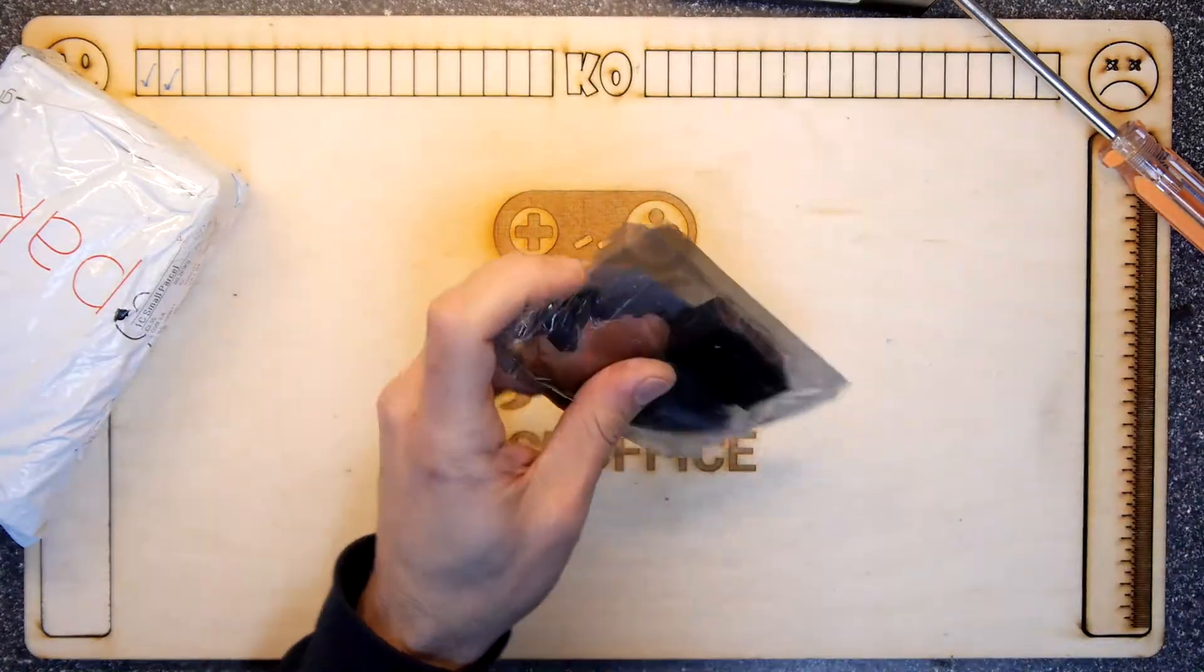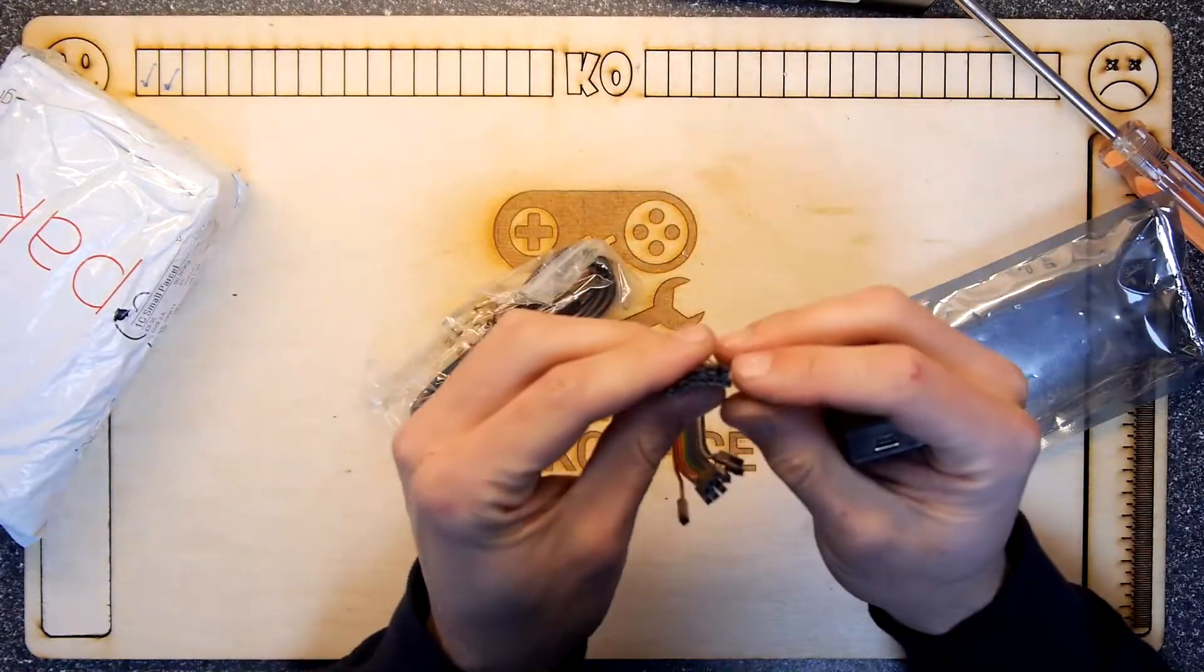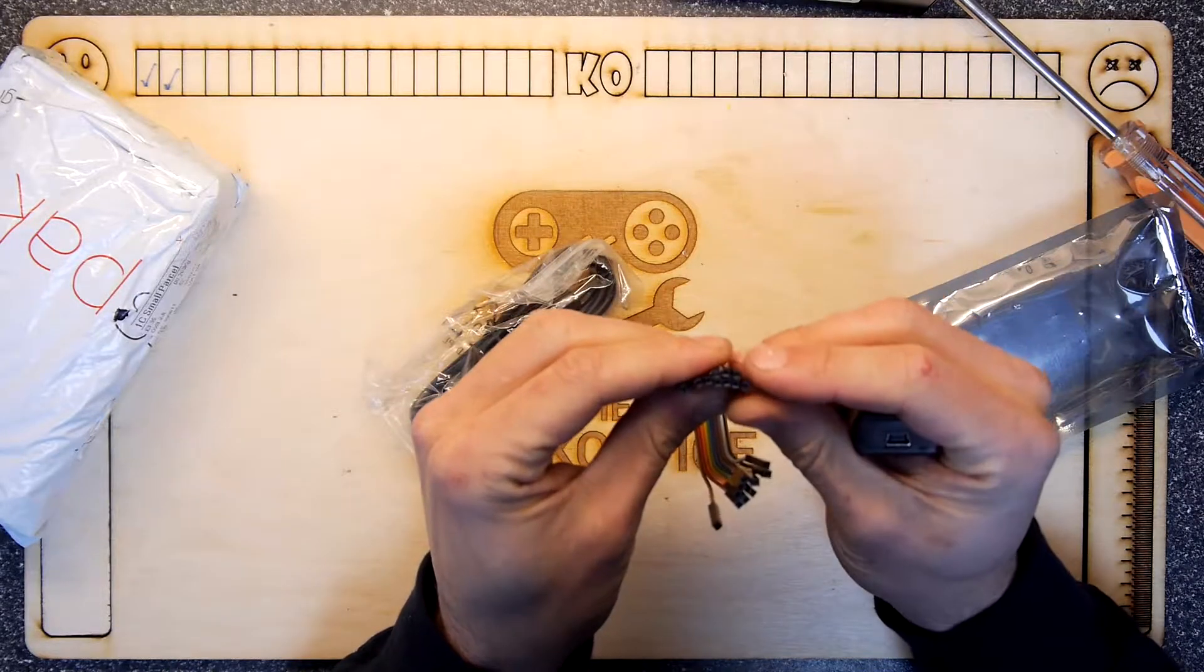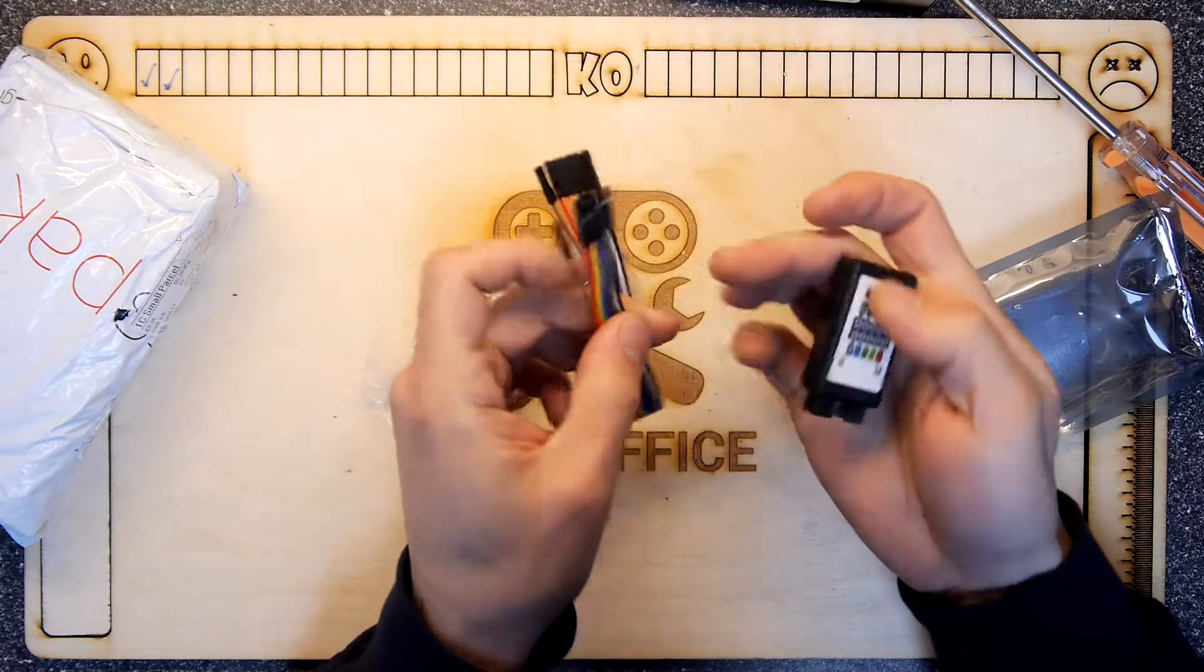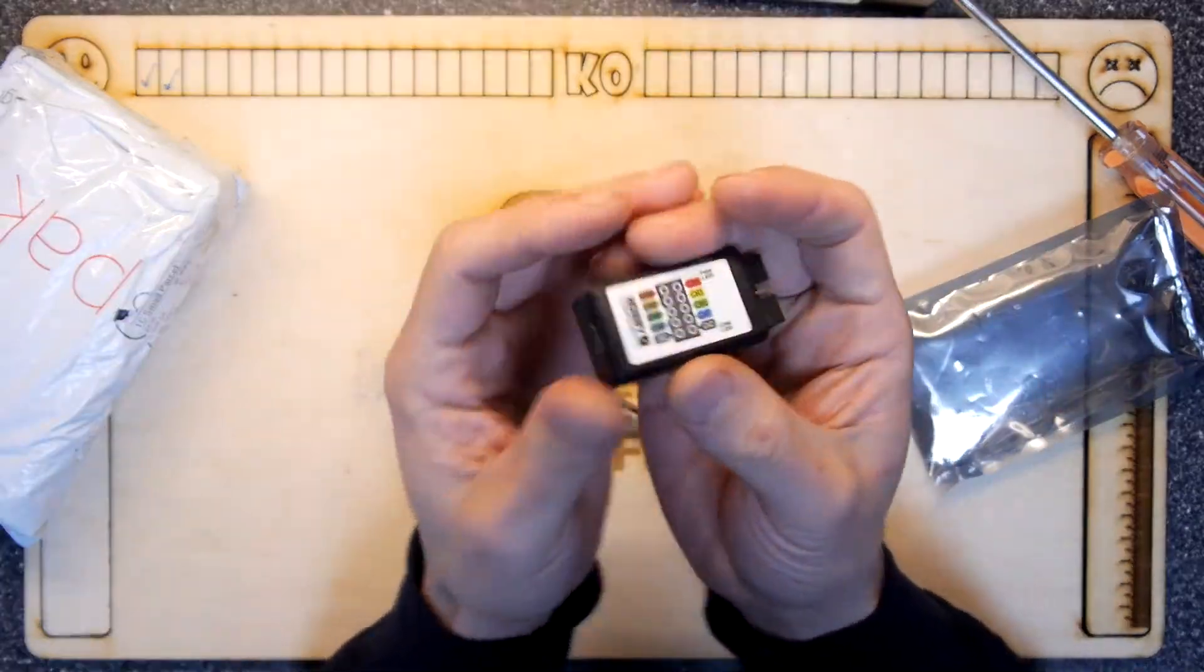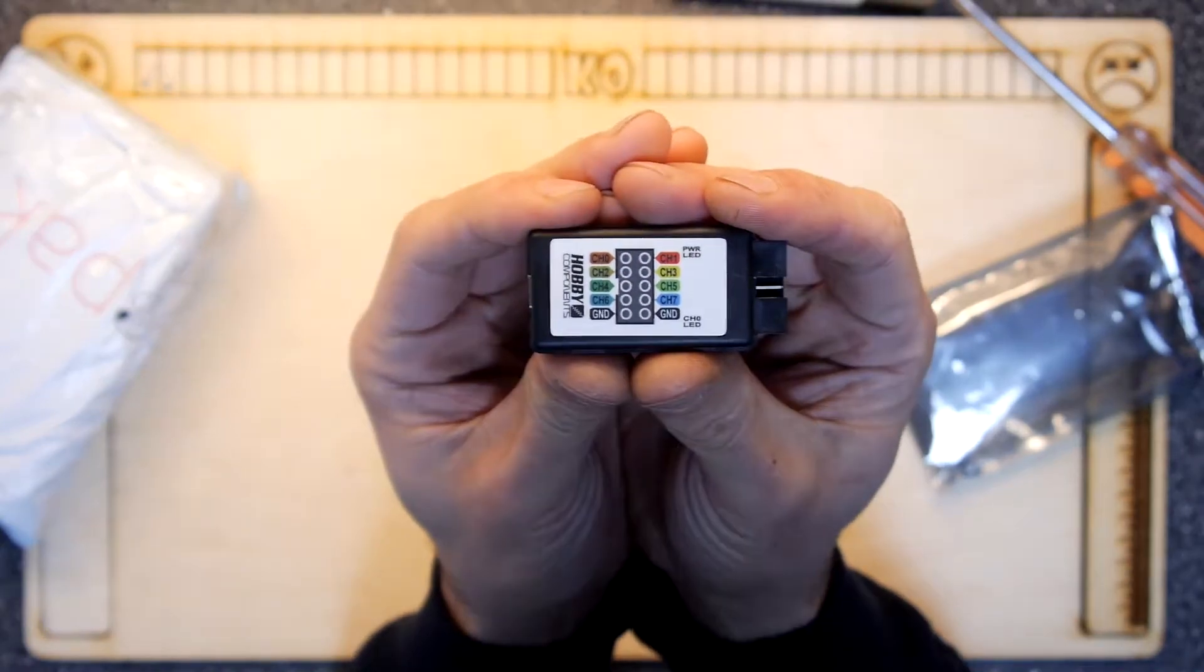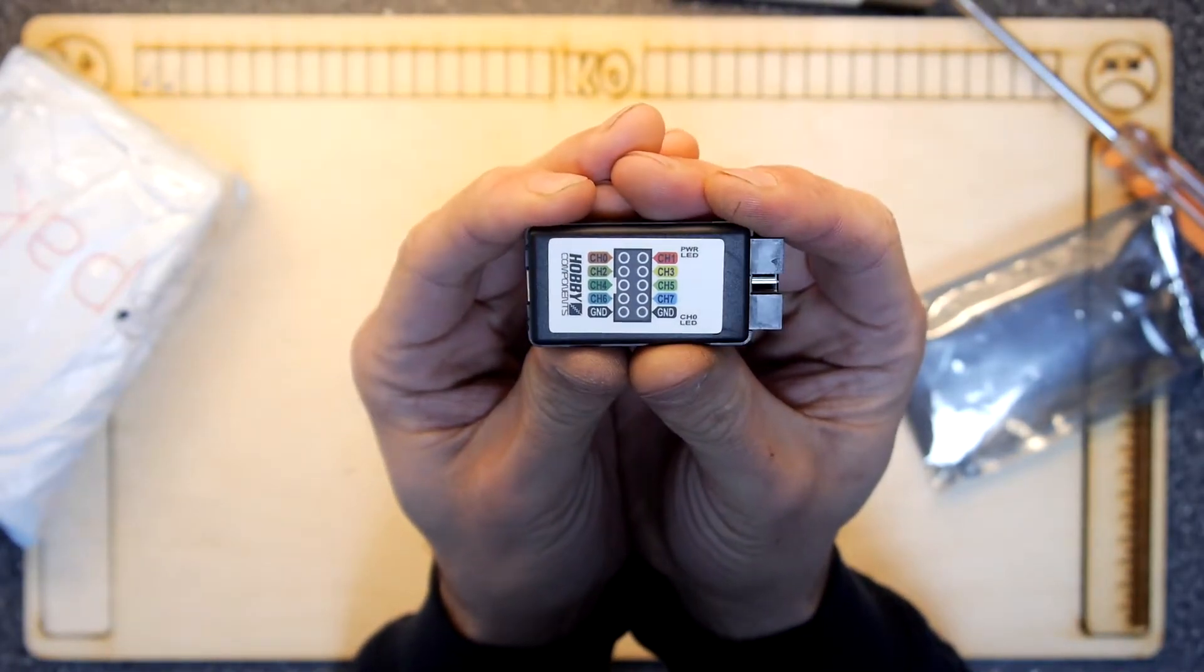So a logic analyzer allows you to test up to, say, eight ports. Let's count this. One, two, three, well, whatever. One, two, three, four, five, six, seven, eight, nine. Am I counting 10 here? Well, maybe it's 10 plus power, and oh, we've got a circuit sort of diagram on the top. Yeah, you've got channel zero to channel seven, and then two grounds.